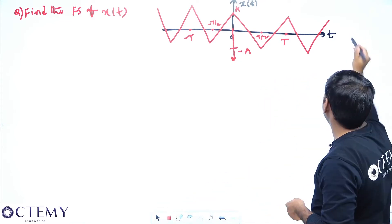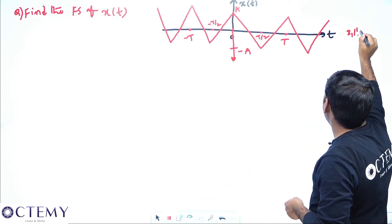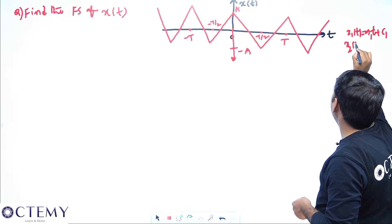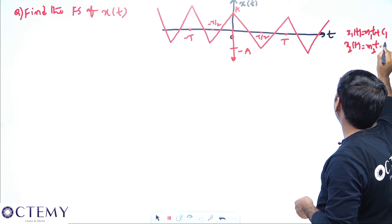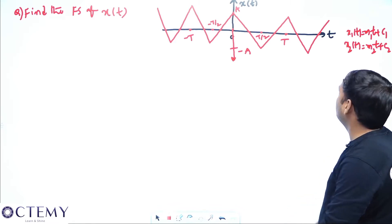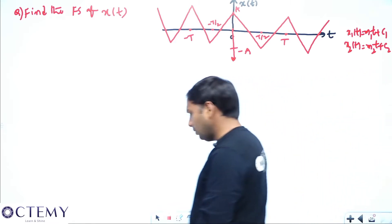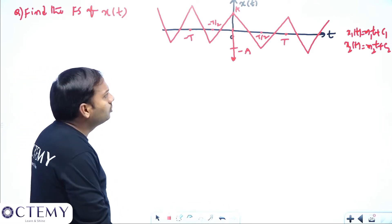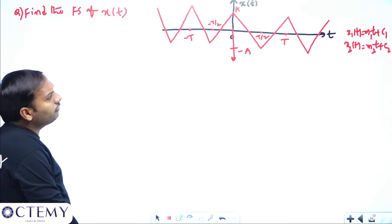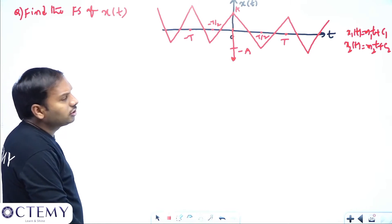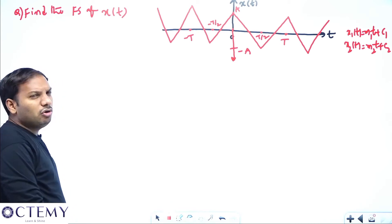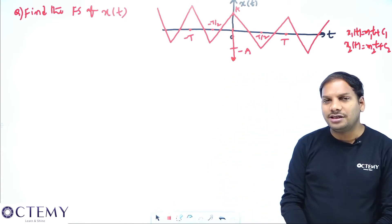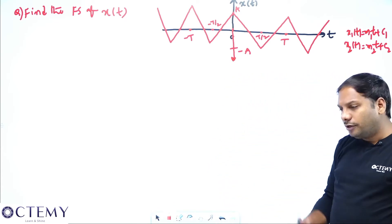You have to write: x1(t) = m1·t + c1 and x2(t) = m2·t + c2. You have to calculate the values of x1(t) and x2(t) like that. But it takes a lot of time solving for slopes m1, m2 and the constants c1 and c2. So I will try to approach the same problem using a different methodology.